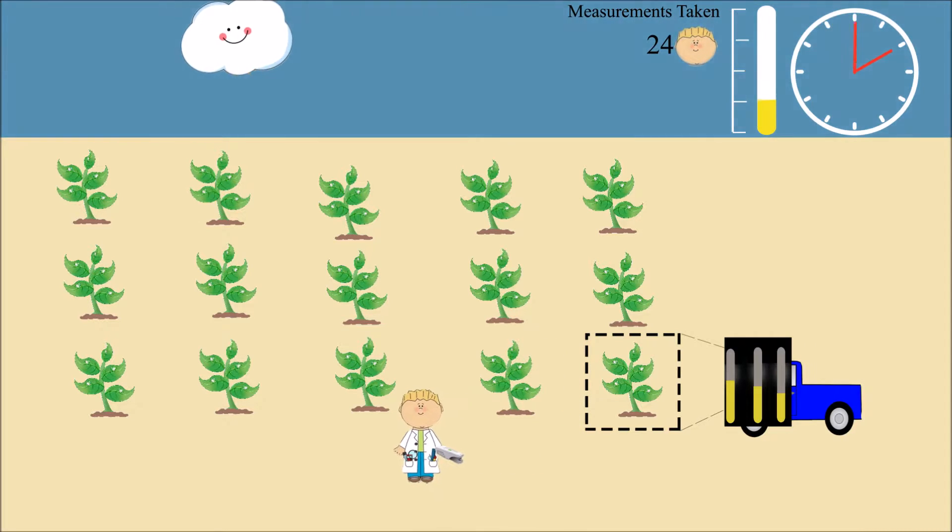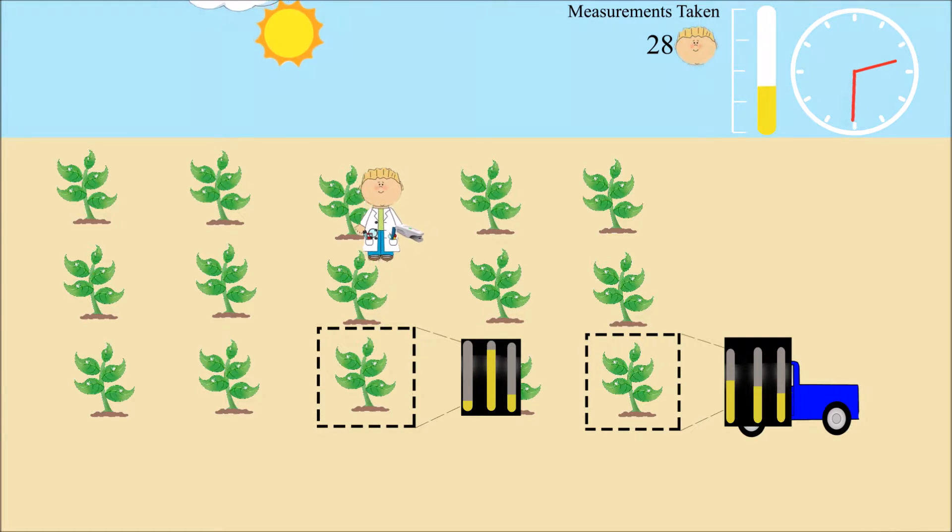In our first example, one scientist is measuring plants alone in the field. He starts at one end of the field and measures each plant, or population of plants, before moving on to the next plant.